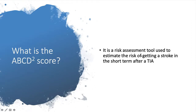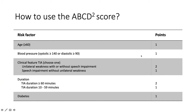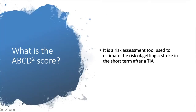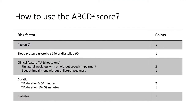This is how you use the ABCD2 score. So ABCD2: A stands for age, B stands for blood pressure, C stands for clinical feature of TIA, D stands for duration of TIA, and the second D stands for diabetes.